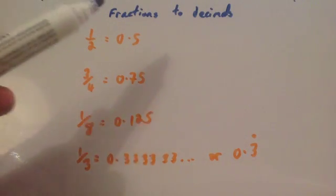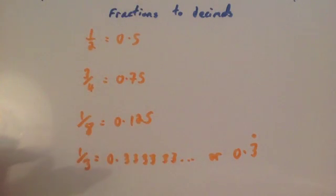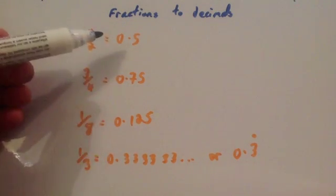In this video we're going to look at how to convert from fractions to decimals. Now you will know some fractions and their equivalent decimals already. For instance, you should know that a half is equal to 0.5.